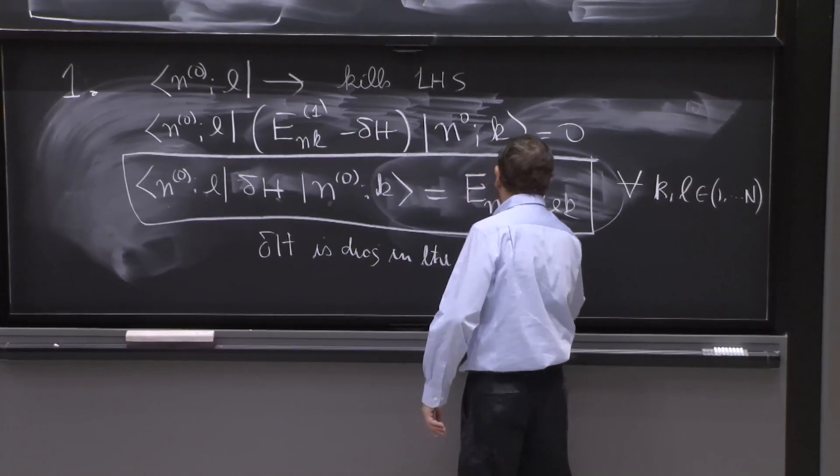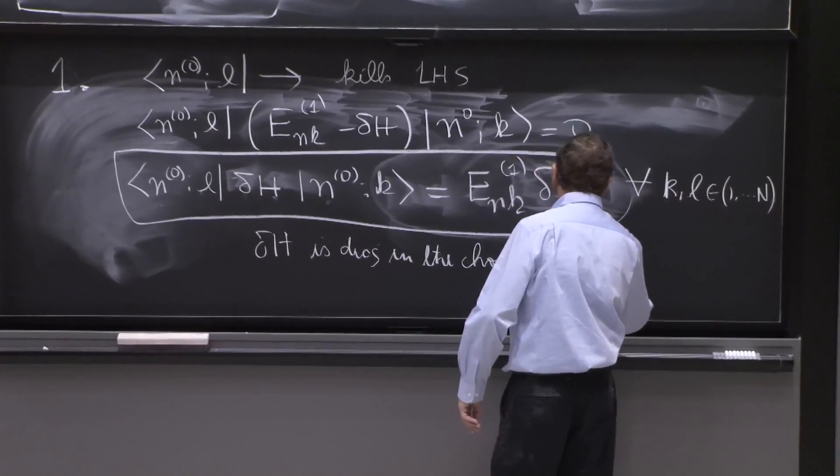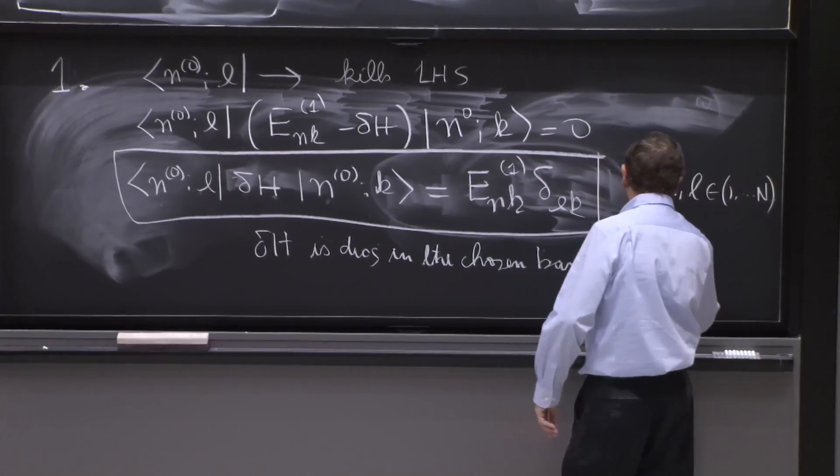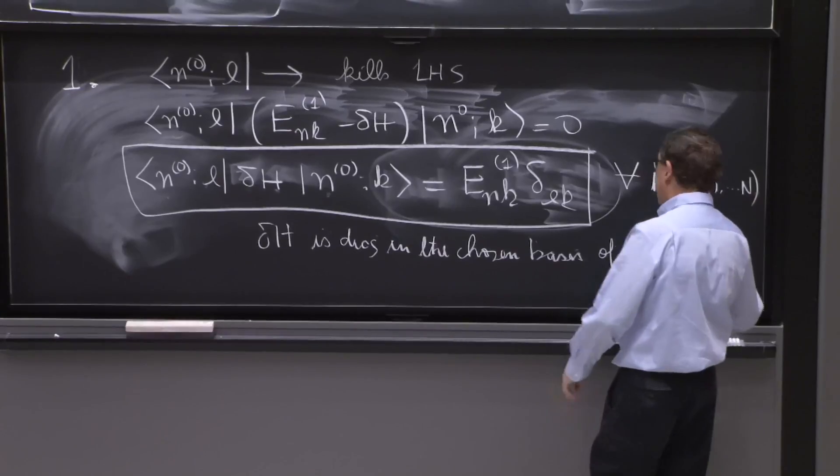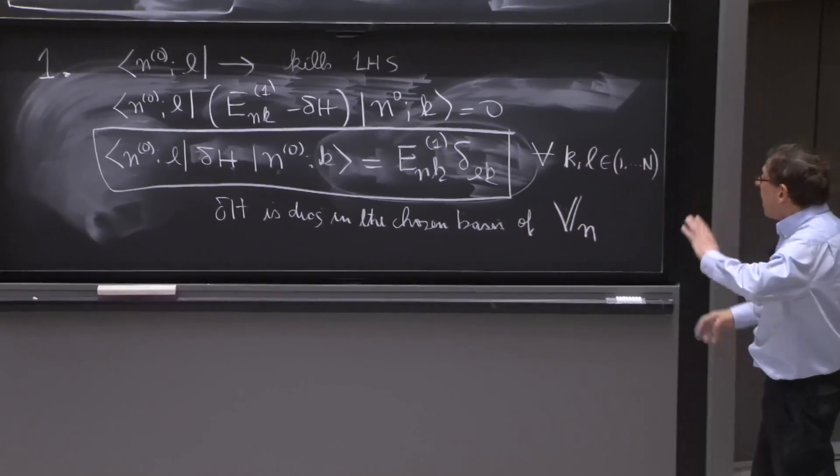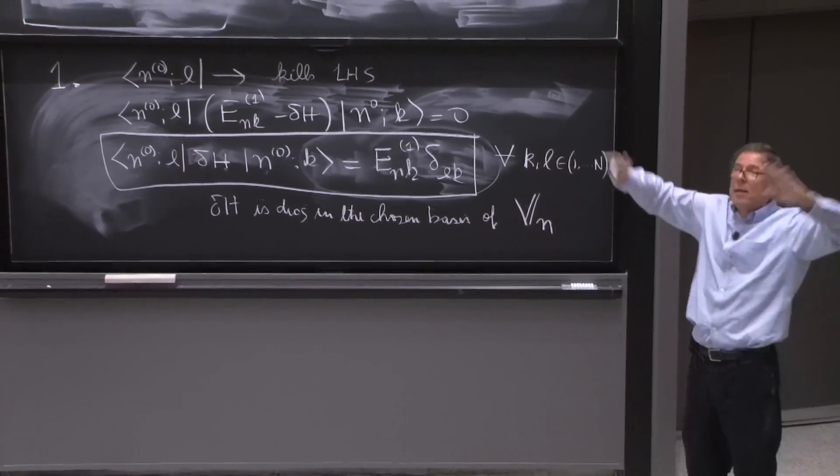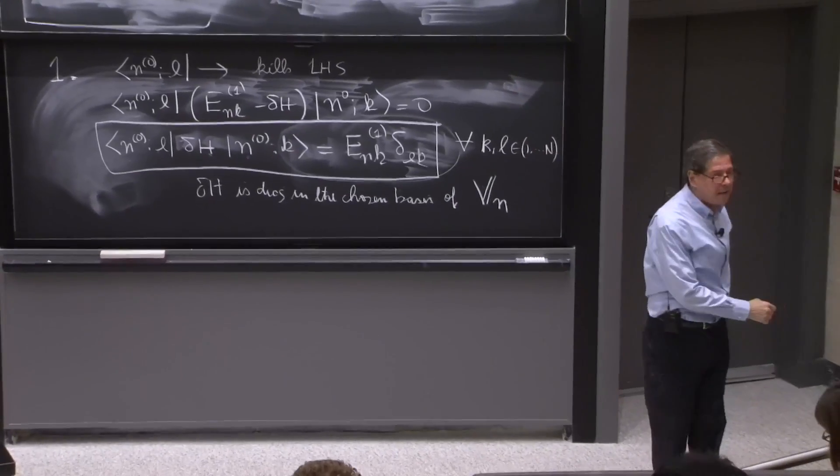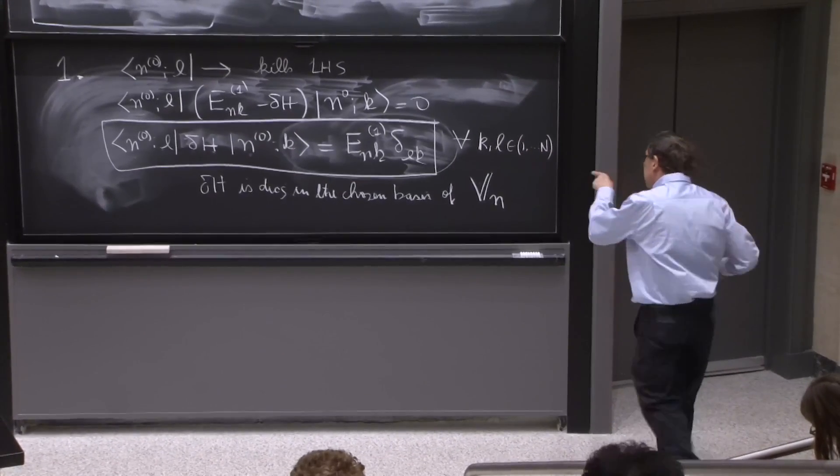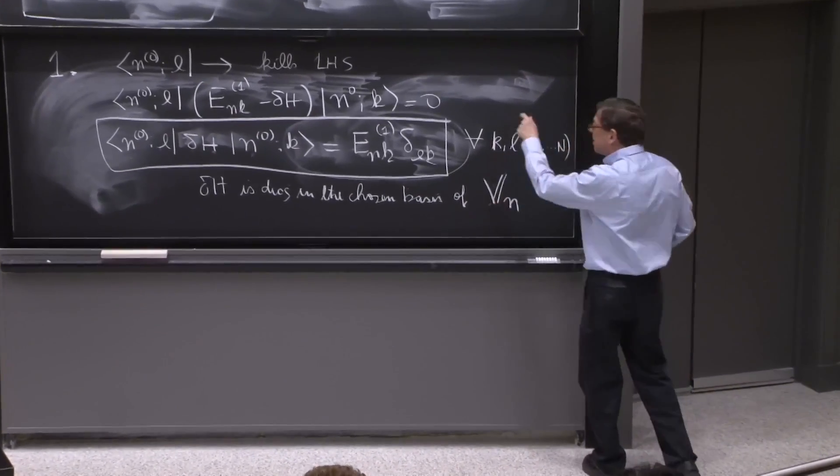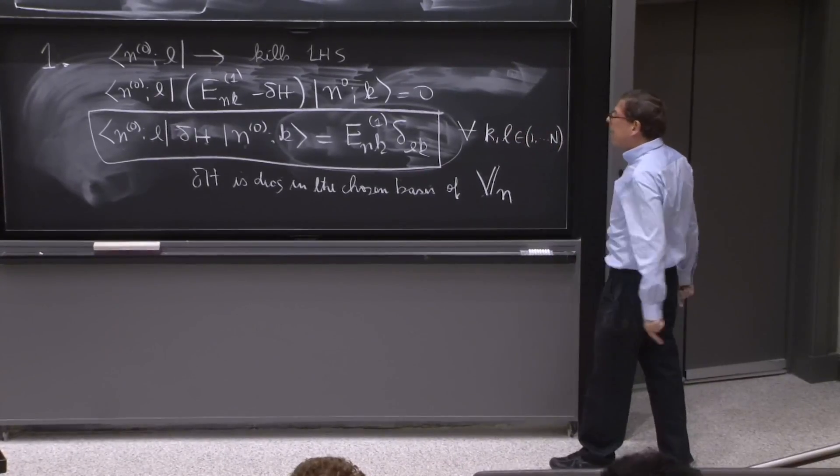Because for k and l running in n by n, so this says that delta H is diagonal in the chosen basis of the subspace vn. Delta H is not diagonal elsewhere. On the big space, it may not be diagonal. But on the little degenerate space, it better be diagonal.